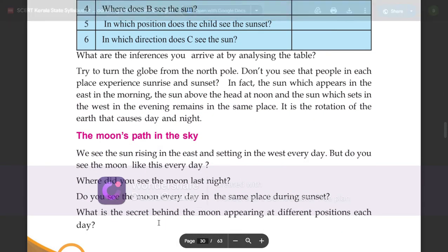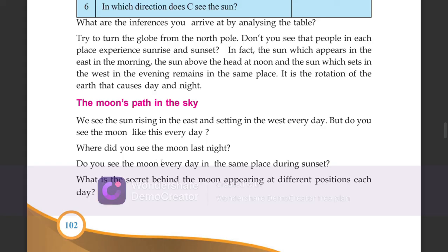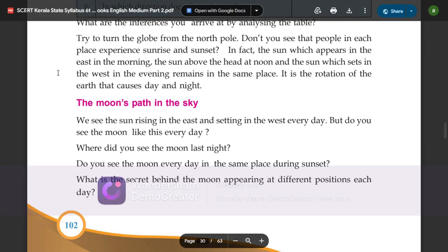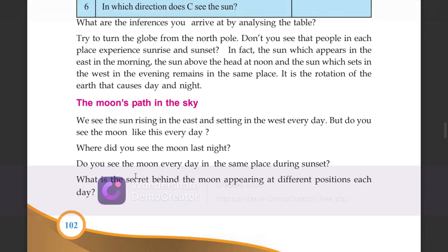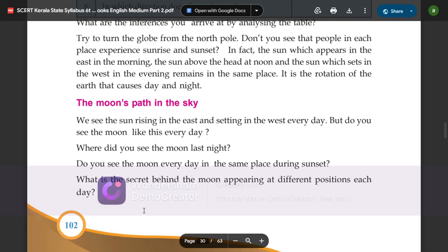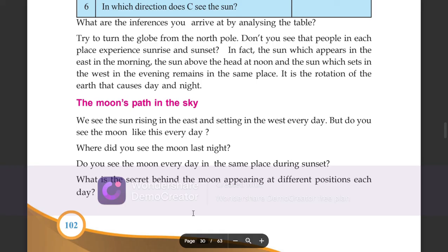The moon's path in the sky — we see the sun rising in the east and setting in the west every day, but do you see the moon like this every day? Why do you see the moon at different positions each day? Do you see the moon every day in the same place during sunset? What is the secret behind the moon appearing at different positions each day?